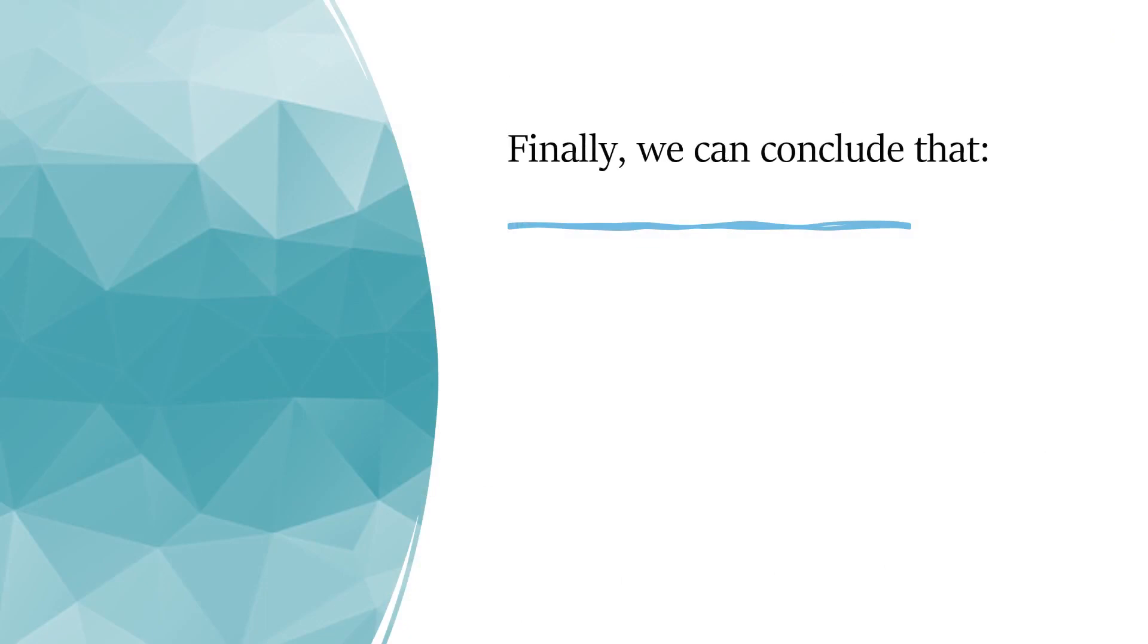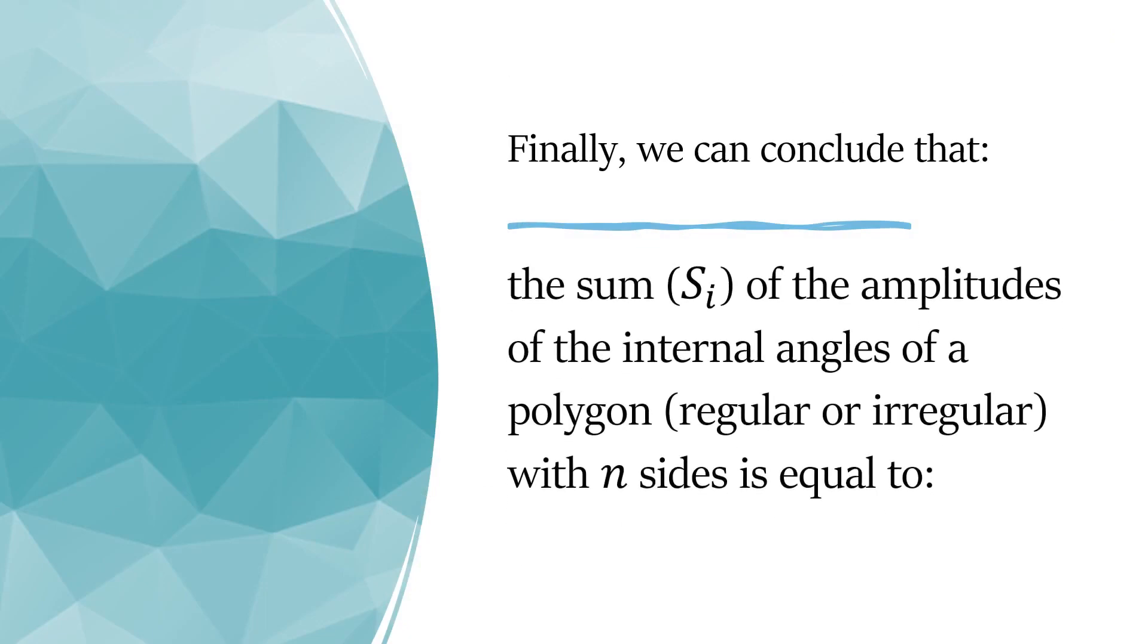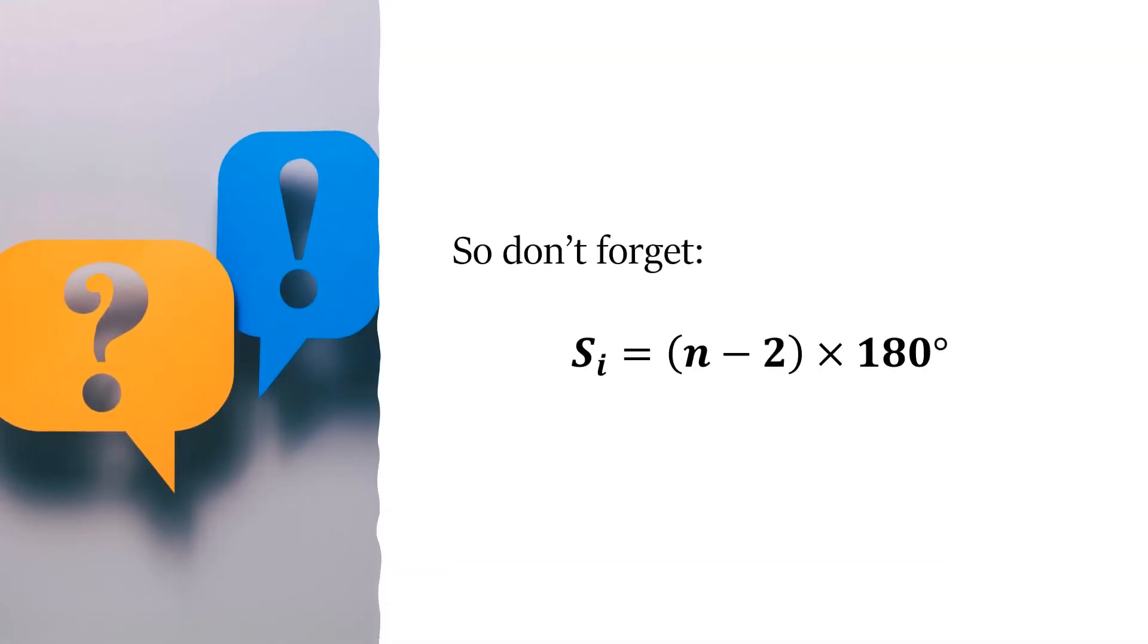Finally, we can conclude that the sum (S_I) of the amplitudes of the internal angles of a polygon, regular or irregular, with n sides is equal to (n - 2) × 180°. So don't forget!